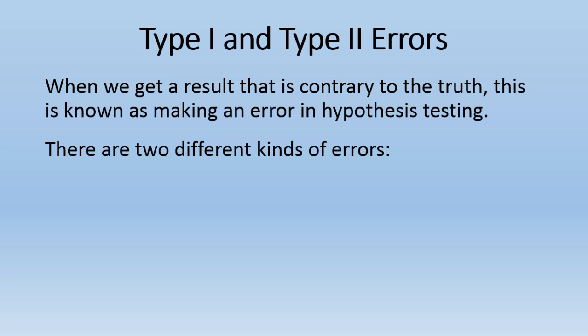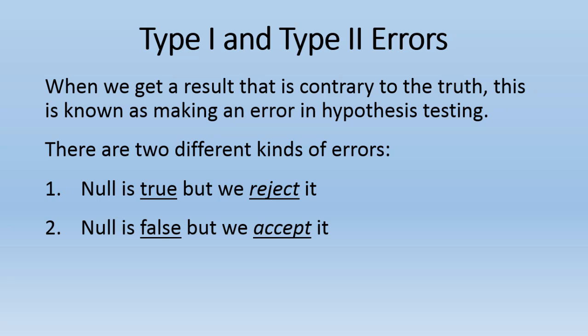There are two different kinds of errors. We have the error where the null is true but we reject it based on our test. And then we have the other kind of error where the null is false but we accept it, or fail to reject it, based on the results of our test. If the null is true and we reject it, that's an error. And if the null is false and we accept it, that's also an error.